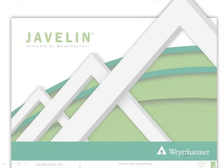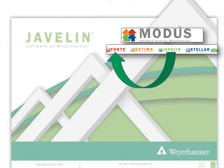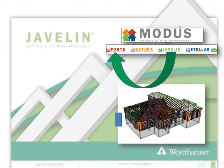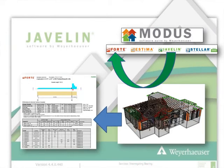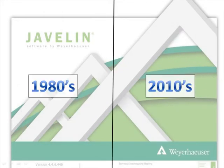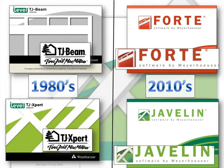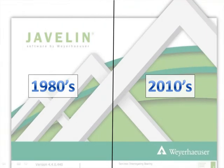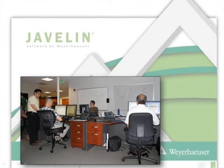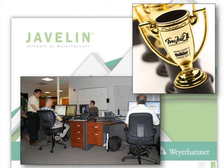The Modus Software Suite by Weyerhaeuser is integrated to enable information flow from one software platform to the other. For example, export Javelin member information into Forte so you can send the design to a design professional for review. Unlike some other software packages, the focus is on the entire structural frame and not just one component. With over 20 years of invested development in integrated design and analysis, Weyerhaeuser provides industry-leading software applications to support your productivity and success.